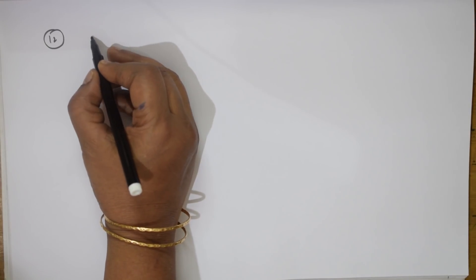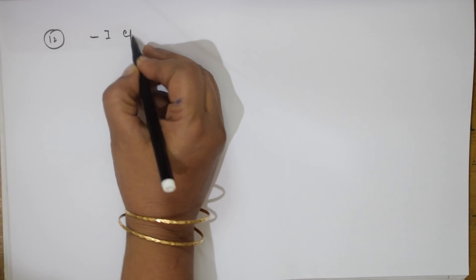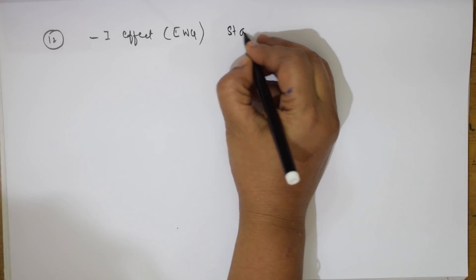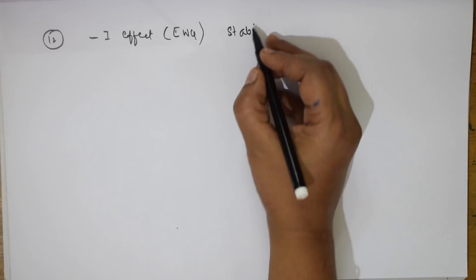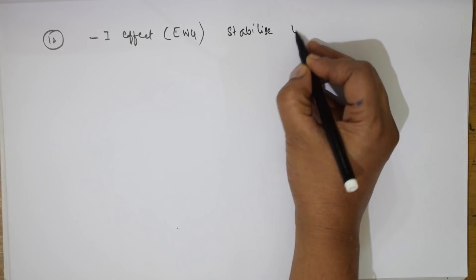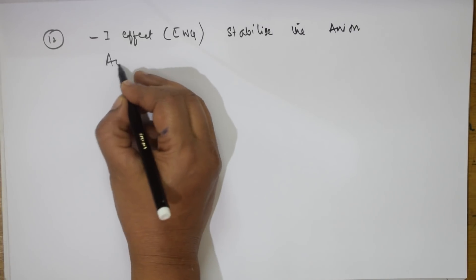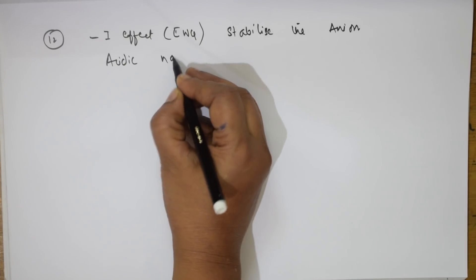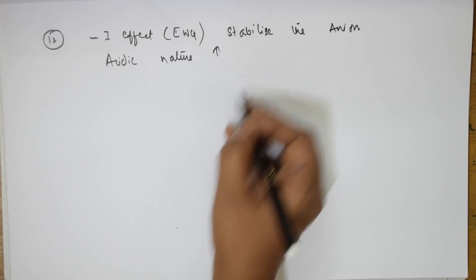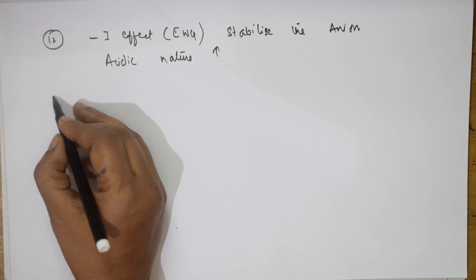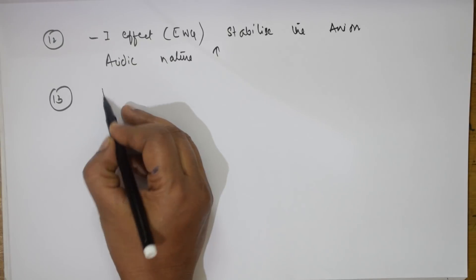The 12th concept: minus I-effect groups are EWG groups. If you have EWG groups, they stabilize the anion. When they stabilize the anion, the acidic nature increases. Remember: if EWG groups are present, acidic nature increases.